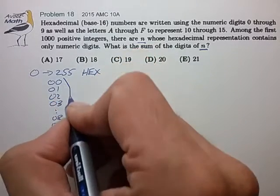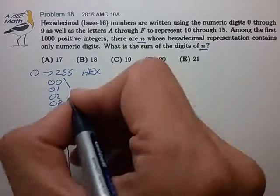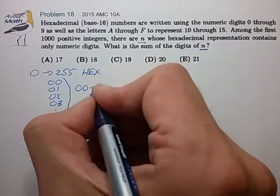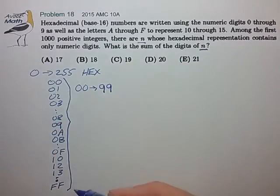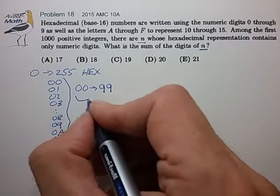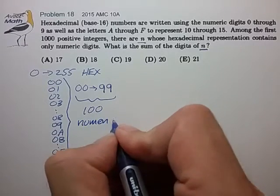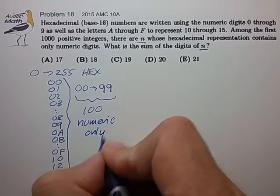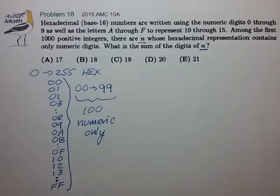And if we examine this list carefully, what we notice is that the numeric only numbers 00 through 99 are all represented in this list, and so there are 100 numeric only numbers in the list of 0 to 255 hex.